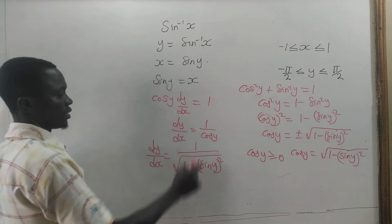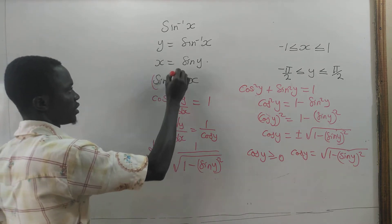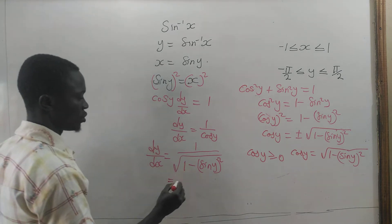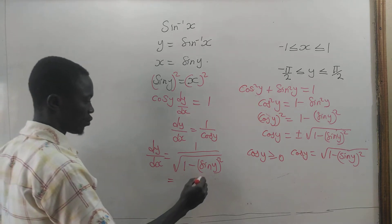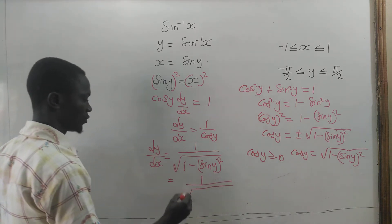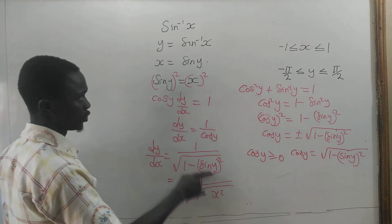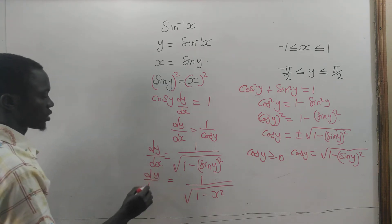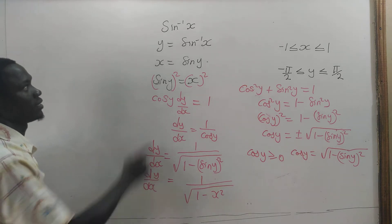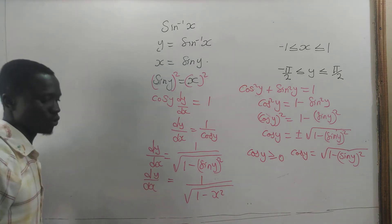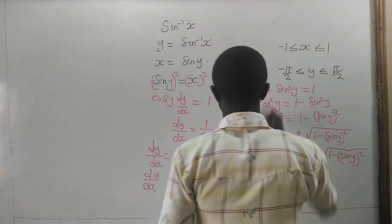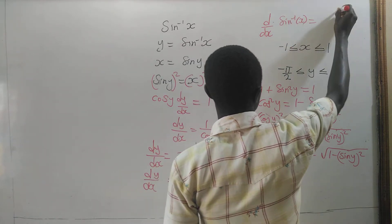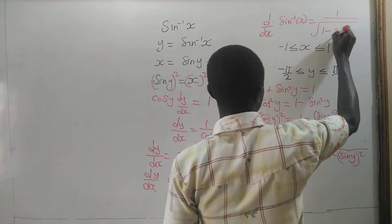Now, if I want sin squared y — if I square x equal to sin y, I have x squared equal to sin squared y. So in place of sin squared y, I am going to have 1 divided by the square root of 1 minus x squared, since sin squared y equals x squared. We can say that the derivative of sin inverse of x is equal to 1 divided by the square root of 1 minus x squared.